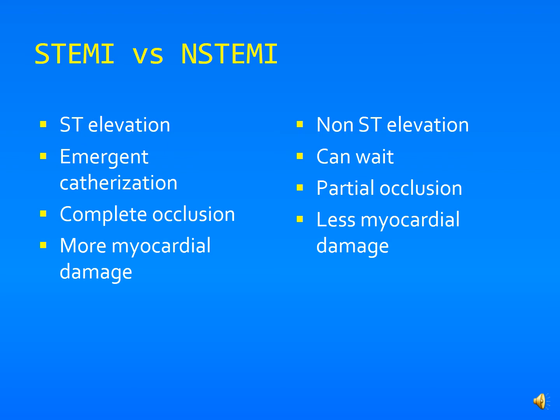A STEMI generally implies a larger occlusion with more myocardial damage and is more emergent. With a STEMI you're automatically going to the cath lab or getting thrombolytics — clot busters — right away. A non-STEMI typically involves an incomplete occlusion of smaller branches or arteries, so these patients can sometimes wait depending on the severity of their symptoms.